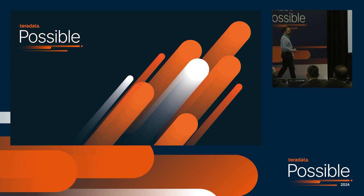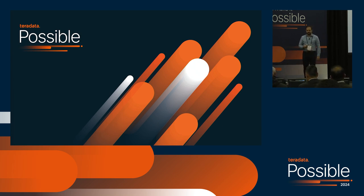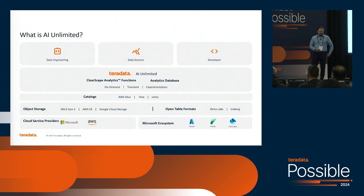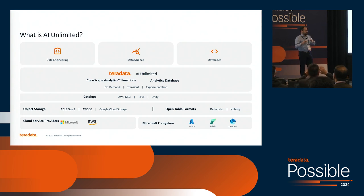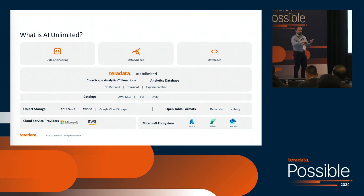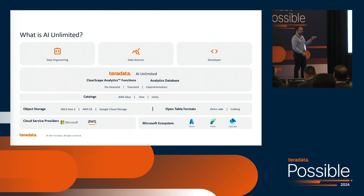Thank you, Madhu. Before I get started, if we could get a raise of hands — has anybody here not seen a demo of AI Unlimited and doesn't know anything about it? Okay, so a few people. All right, that's refreshing. So what is AI Unlimited? There have been themes at this conference about reducing friction and meeting the customer where they are — those are at the heart of what we're doing with AI Unlimited. With this product, we're taking the engine out of the warehouse and making it accessible to the data builders within your organization: the data engineers and data scientists. We want it to be accessible to them, we want them to be able to pay for it themselves, consume compute without impacting production systems, and we want it to work on open table format object store — really flexible and easy to use.